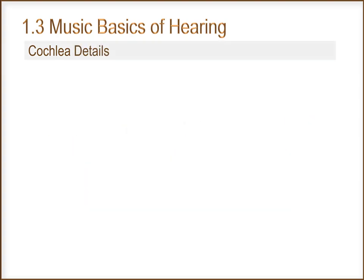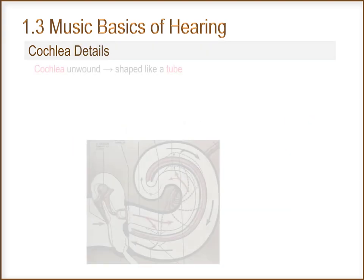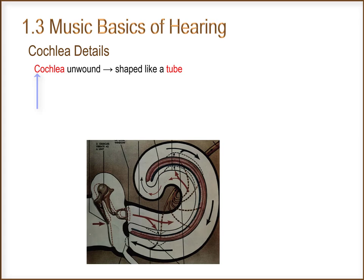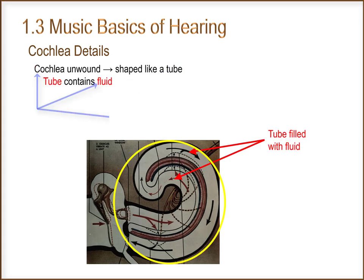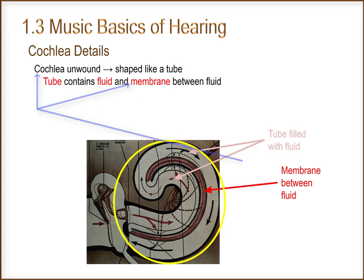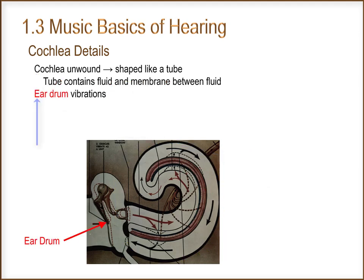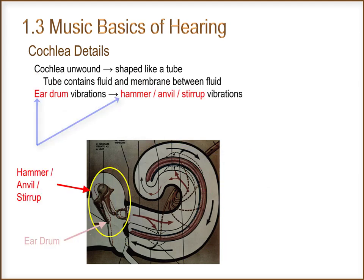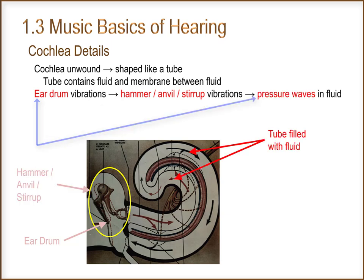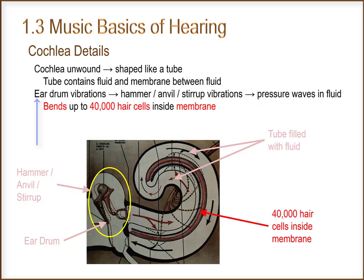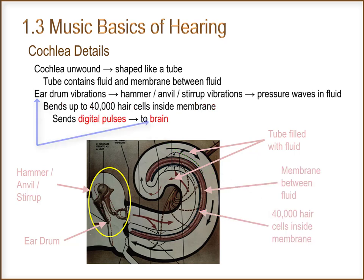We'll continue with some cochlea details. If the cochlea were unwound, it would be shaped like a tube. The tube contains fluid, and a membrane between the fluid. Eardrum vibrations result in hammer, anvil, and stirrup vibrations, which creates pressure waves in the fluid. The fluid pressure waves bend up to 40,000 hair cells inside the membrane, sending digital pulses to the brain, which the brain interprets as sound.